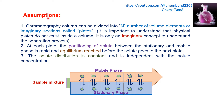Now for the assumptions: a chromatographic column can be divided into N number of volume elements or imaginary sections called plates — these are theoretical plates. It is important to understand that physical plates do not exist inside the column; it is only an imaginary concept to understand the separation process. There are no physical boundaries or partitions — just imaginary areas at which the solute component gets equilibrated between the stationary phase and mobile phase.